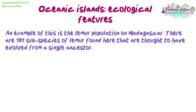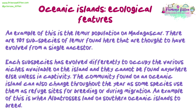There are 101 subspecies of lemur found on Madagascar, thought to have evolved from a single ancestor. Each subspecies has evolved differently to occupy the various niches available on the island and they cannot be found anywhere else unless in captivity. The community found on an oceanic island can also change throughout the year as some species use them as refuge sites for breeding or during migration — for example, albatrosses that land on southern oceanic islands to breed.